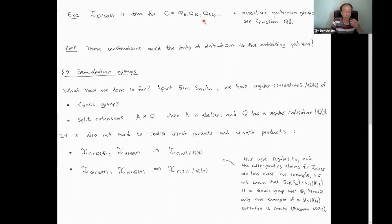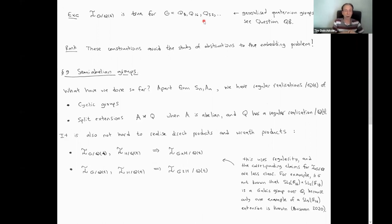So this is a very powerful approach. You can ask yourself: how far can we get with this? What is the class of groups we can construct using the technology we've developed so far? This class is called semi-abelian groups, and it covers a lot of soluble groups. So I think it's a very interesting one to mention here.